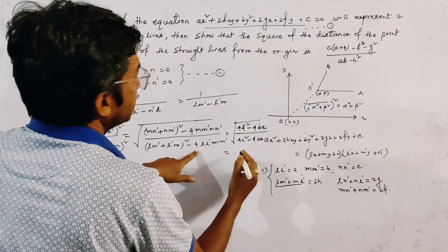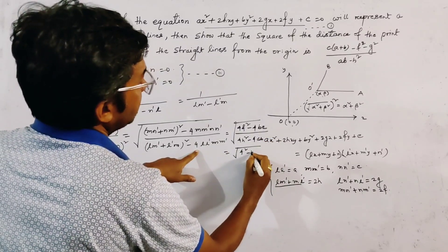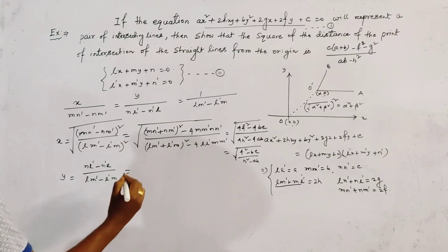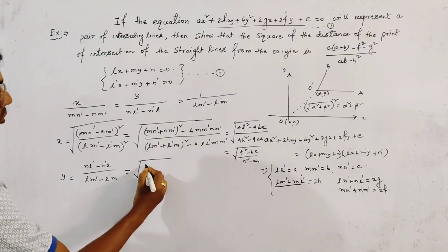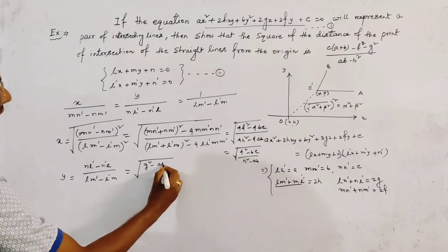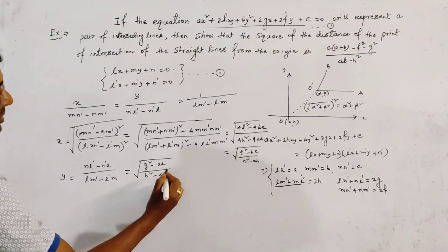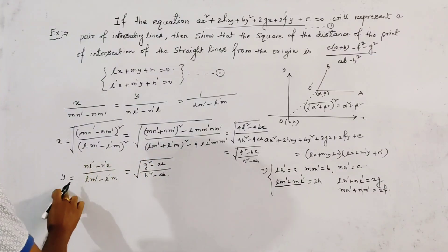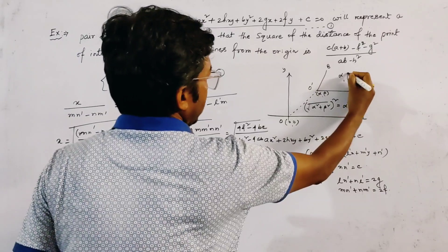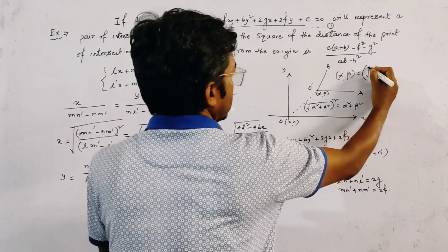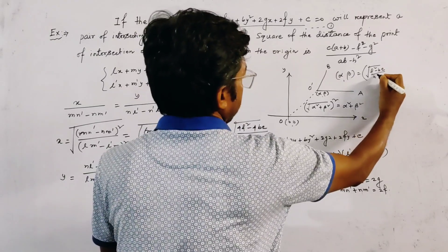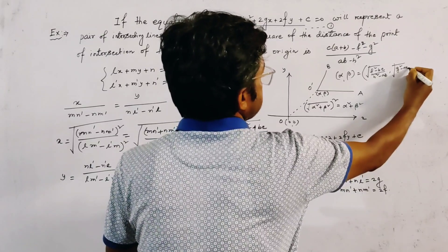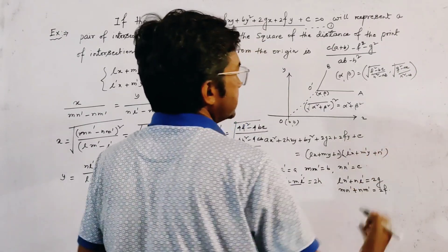So we get the value as root over (F² - BC) / (H² - AB). Similarly, by applying the same logic, the other value is root over (G² - AC) / (H² - AB). Now we get the point of intersection, which is given by (α, β), equal to (√((F² - BC)/(H² - AB)), √((G² - AC)/(H² - AB))). This is the point of intersection.